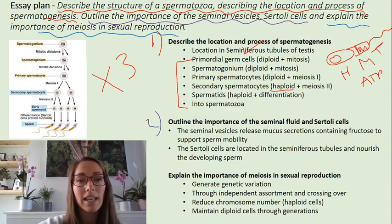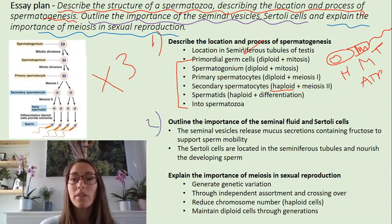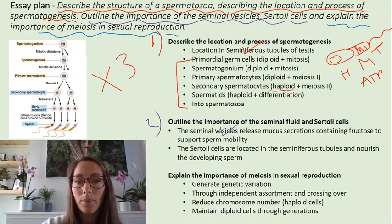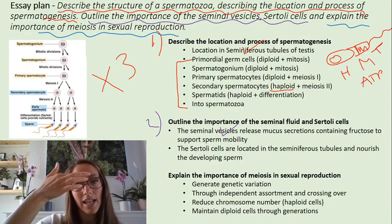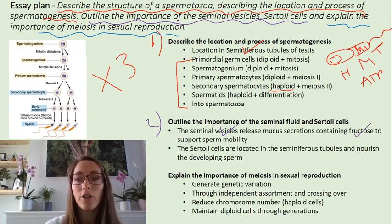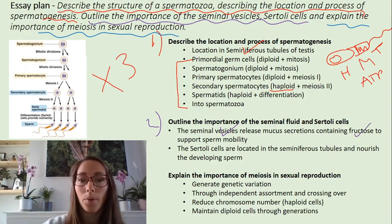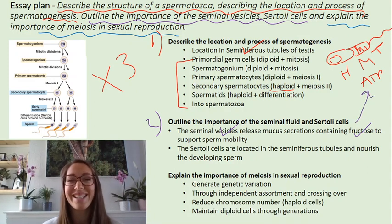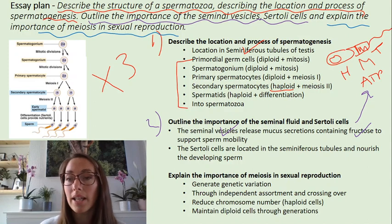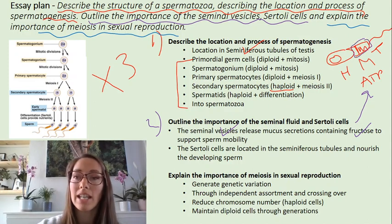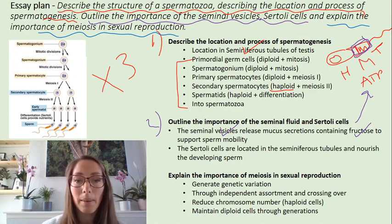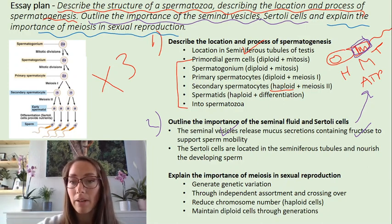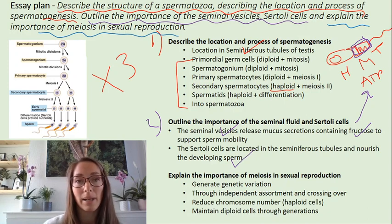The second paragraph: outline the importance of seminal fluid and the Sertoli cells. Seminal fluid is released from the seminal vesicles and contains the carbohydrate fructose, which is used for sperm mobility. The fructose is broken down into monosaccharides and used by the mitochondria in the midsection to generate ATP for the sperm to swim. The Sertoli cells are located in the seminiferous tubules and nourish the developing sperm.